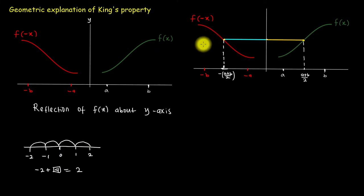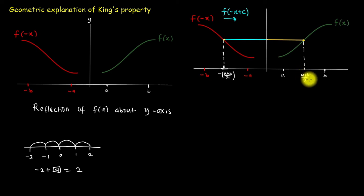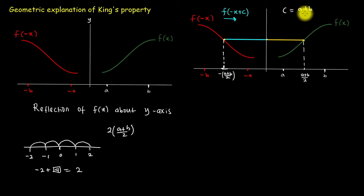Consequently, for me to move the midpoint of the graph of f of negative x to be at the midpoint of the graph of f of x, I need to add a particular value to the argument. For me to move from negative (a+b)/2 to (a+b)/2, I just need to add twice of (a+b)/2 to this value. So our c is going to be 2 times (a+b)/2, which gives us a plus b.